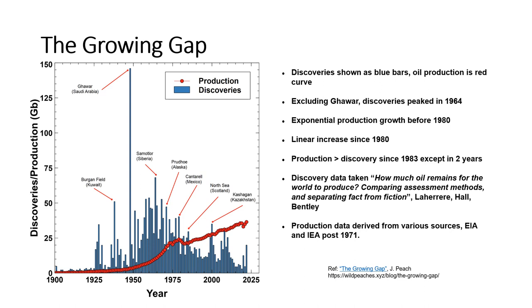This shows annual oil discoveries and production. Outside of the discovery of Ghawar in 1949, the maximum volume of discoveries happened in 1964. Since 1983, production has generally exceeded annual discoveries. In 2020, 20 billion barrels were discovered, but consumption has increased to over 36 billion barrels per year. The following year, 2021, discoveries fell back to 4 billion barrels, more typical of the past decade. Before 1980, production increased exponentially but has been linear since then. Discovery data was derived from the paper by La Herrera, Hall, and Bentley. Production numbers are from EIA and IEA data, and other sources before 1970.